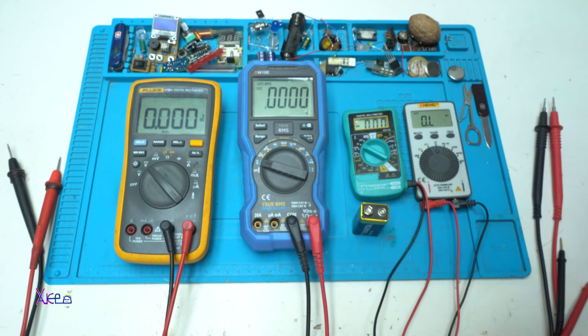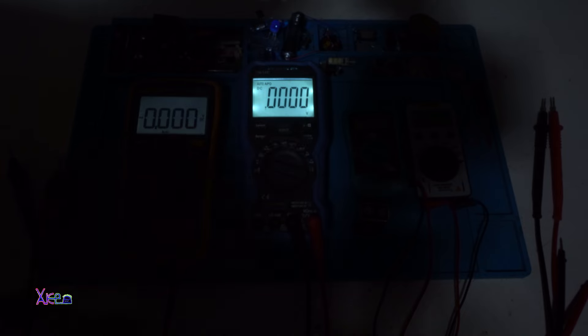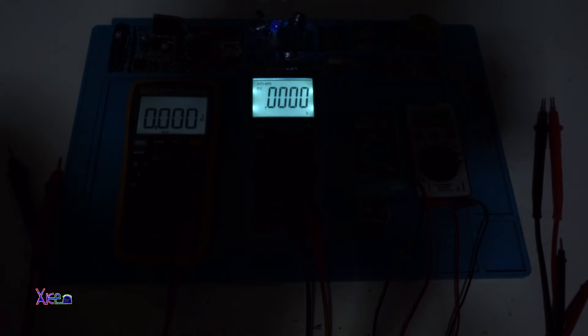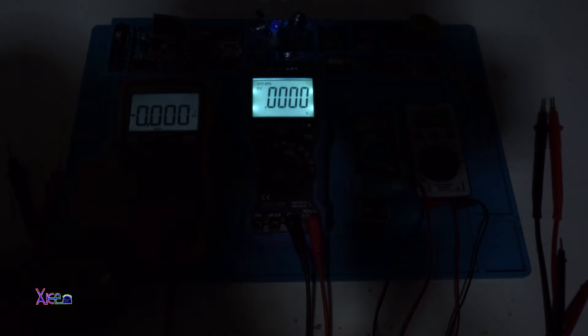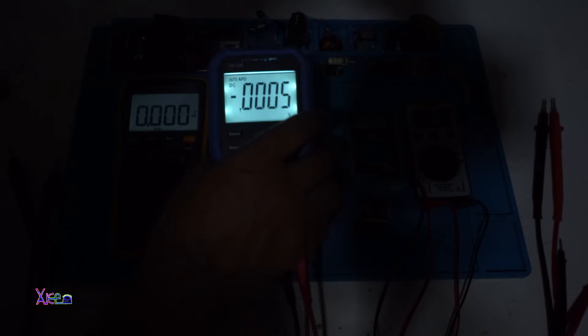Let me show you just to kill the lights. Let's turn it off. This is the Fluke. And this is the OW18E model. Also, this model have front light.